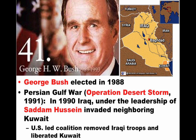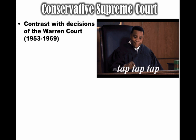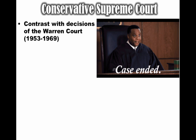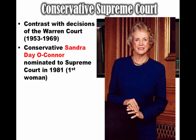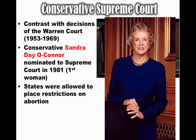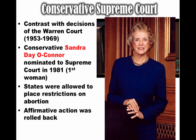During the Reagan and Bush presidencies, you're going to see the rise of a conservative Supreme Court — in sharp contrast with the decisions of the Warren Court, led by Earl Warren from 1953 to 1969. Sandra Day O'Connor was nominated to the Supreme Court in 1981 by Ronald Reagan — she was the first woman. Other conservative justices included Antonin Scalia and Clarence Thomas, nominated by George Bush, whose confirmation involved a major battle over sexual harassment charges. Under these more conservative judges, the court allowed states to place restrictions on abortion, required parental notification in some cases, and rolled back affirmative action policies.